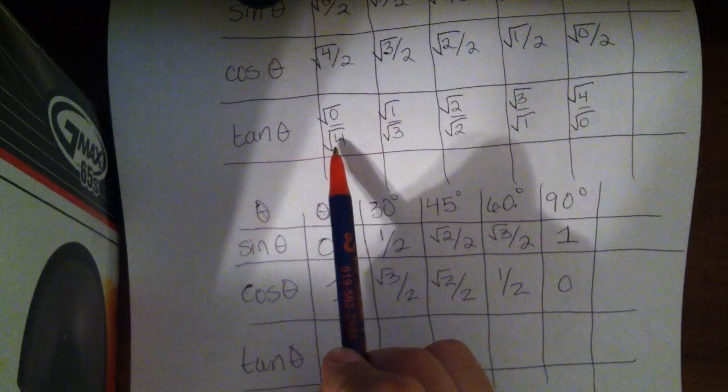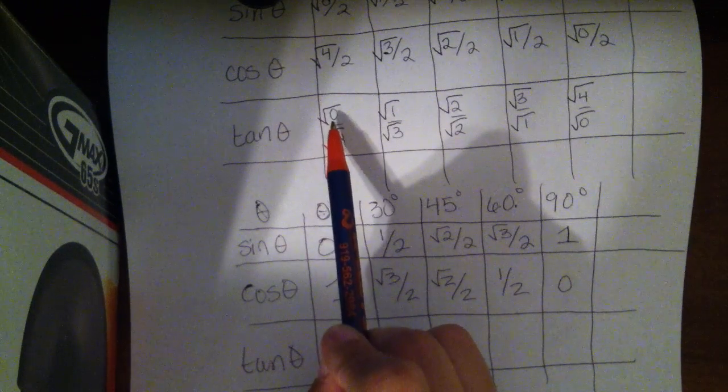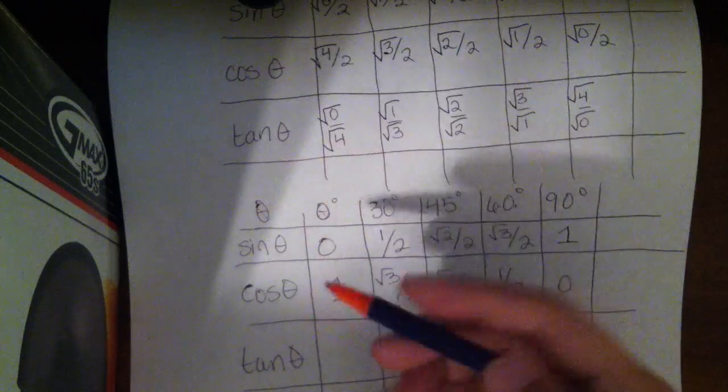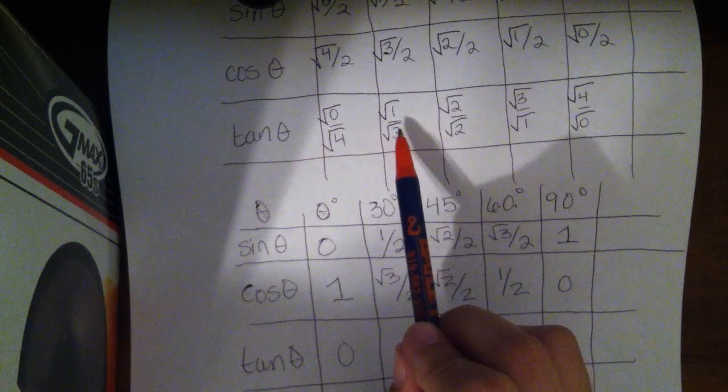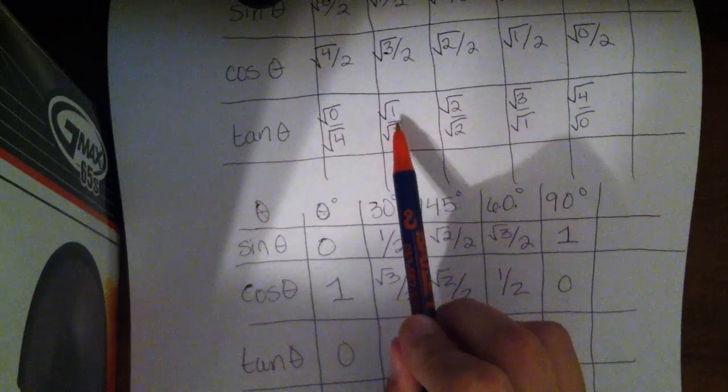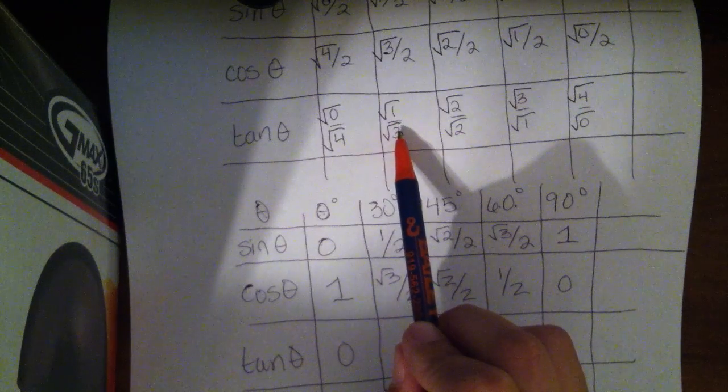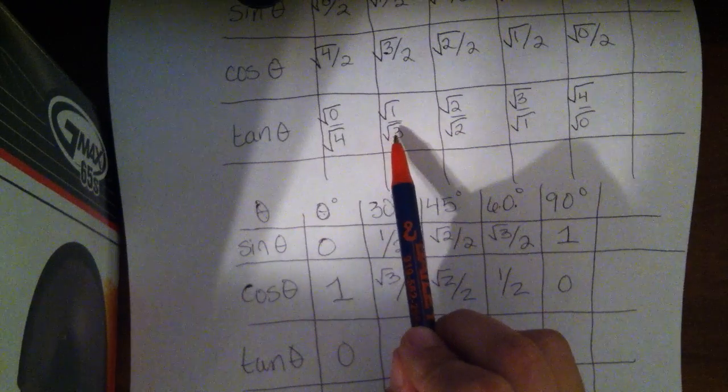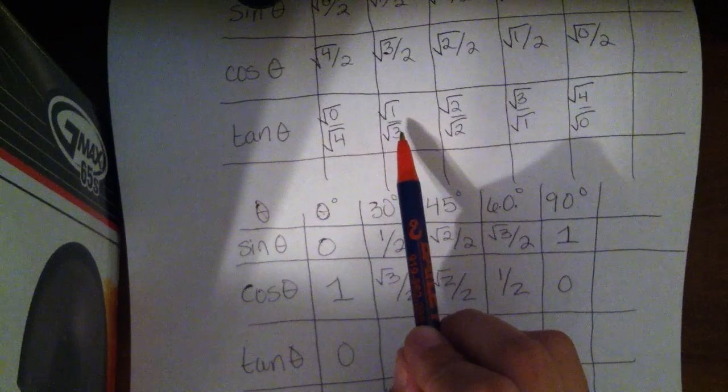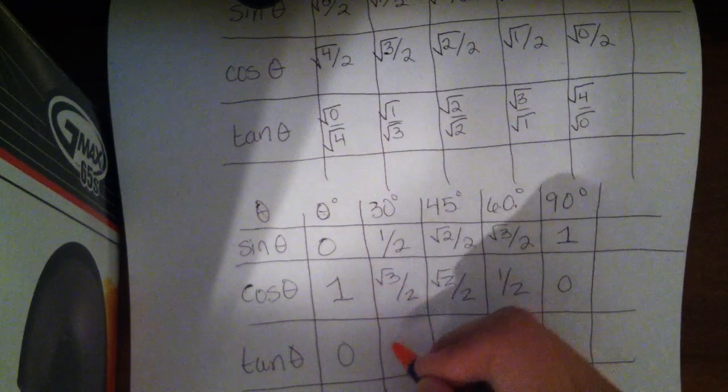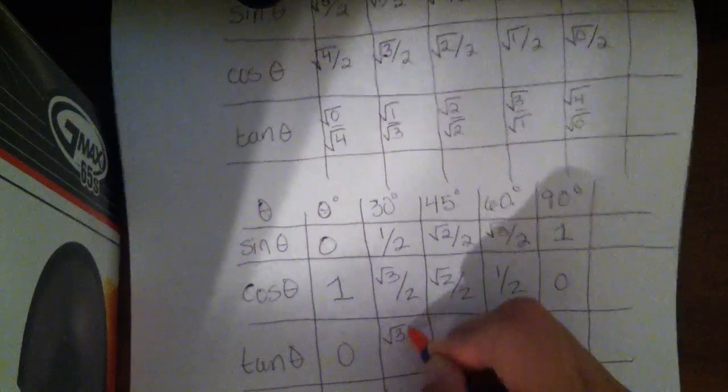For tangent of 0, we get 0 over 2, which is 0. For the tangent of 30, we get 1 over the square root of 3, and usually you're going to see that rationalized. So if you multiply the top and the bottom by square root of 3, you'll actually get the square root of 3 over 3.